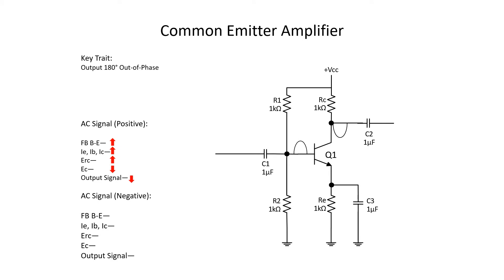When the AC signal alternates negative, we decrease forward bias at the base-emitter junction, which decreases current flow. Less current through the collector resistor means its voltage drop goes down, leaving more voltage for the collector — which is also our output signal. That gives us a nice AC sine wave. Since we're amplifying AC, we need to talk about voltage gain, or AV. Remember the formula: Eout divided by Ein gives you AV. Pro tip: if you put a voltage symbol or unit of measurement on AV, you'll be wrong every time. AV is just a multiplier.